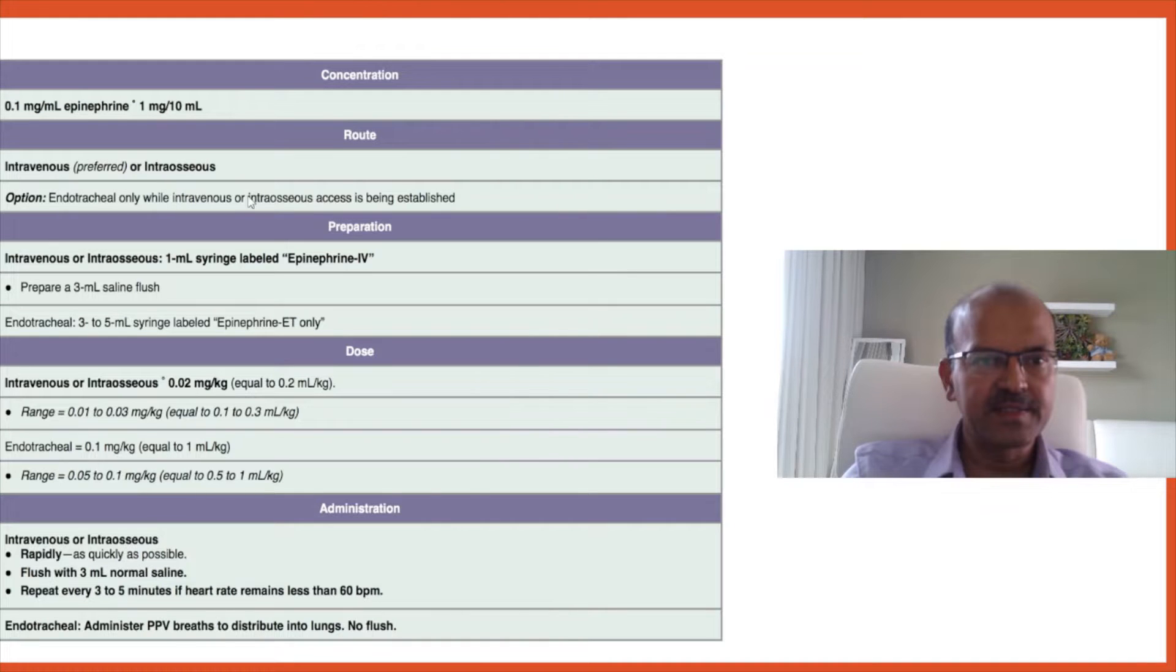Intravenous is preferred, or intraosseous. Endotracheal is only used while access is being established to buy time. Remember the flush is 3 mL saline. Endotracheal should be a 3 to 5 mL syringe; no flush is needed for ET.